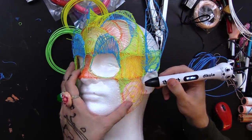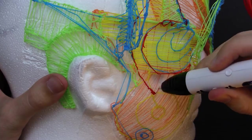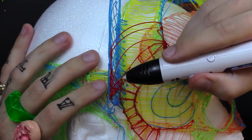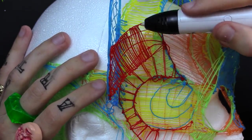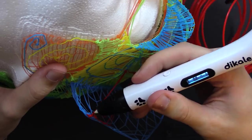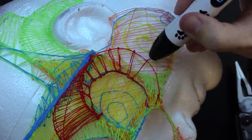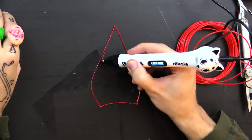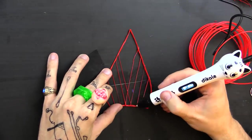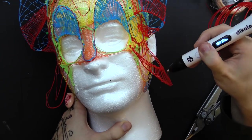These pens use the same kind of filament that goes in 3D printers. So basically when you use these, you become a human 3D printer. Except we're a little bit less accurate, but a little bit more able to adjust on the fly to changes in situations and attitudes and altitudes and weather conditions.